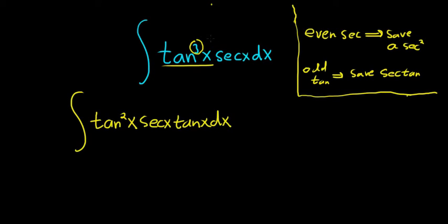Okay, so because tan x times tan squared is tan cubed, so it checks. So we saved a secant tangent because we have an odd tangent. So what do you do next?